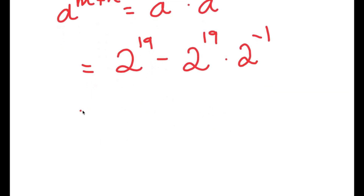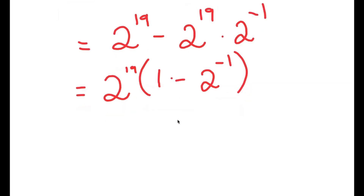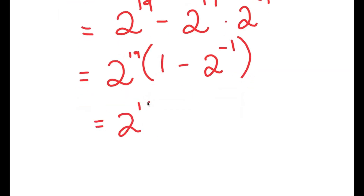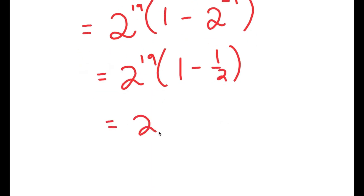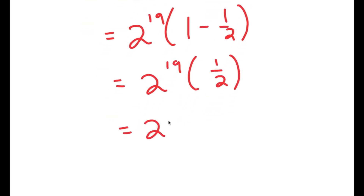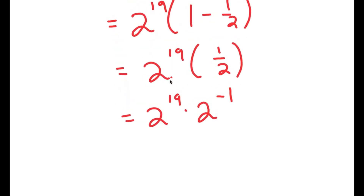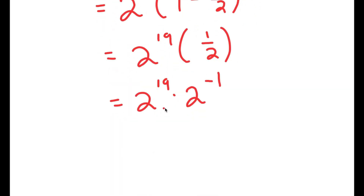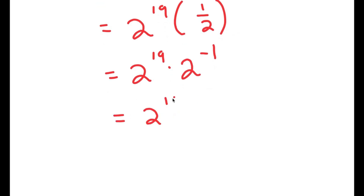From here, my greatest common factor from these two terms is 2 to the power of 19. So I get 2 to the power of 19 times (1 minus 2 to the power of negative 1), which is equal to 2 to the power of 19 times (1 minus 1 half), which equals 2 to the power of 19 times 2 to the power of negative 1. And 2 to the power of 19 times 2 to the power of negative 1 is equal to 2 to the power of 18.